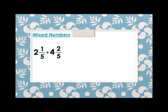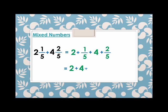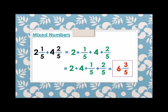Now let's add two mixed numbers. We have two and one fifth plus four and two fifths. We rewrite as two plus one fifth plus four plus two fifths. Combining whole numbers and fractions: two plus four equals six, and one fifth plus two fifth equals three fifths, since they are like terms. So two and one fifth plus four and two fifths equals six and three fifths.